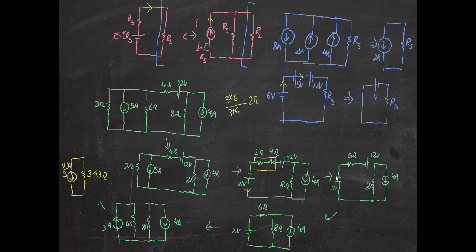We now have a ten-volt voltage source and a twelve-volt voltage source. Applying the rule for combining sources: twelve volts is bigger than ten volts, so we subtract — twelve minus ten equals two volts — and the current flows to the right. The result is a two-volt source with the six-ohm resistor.